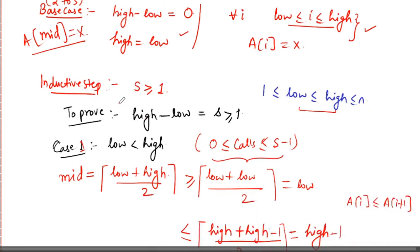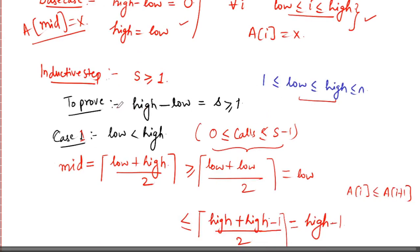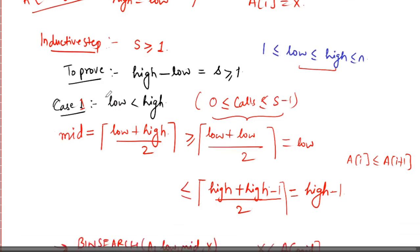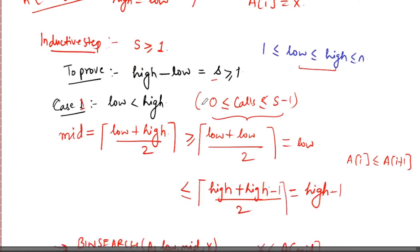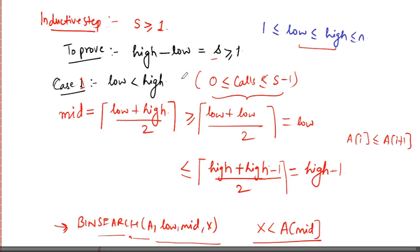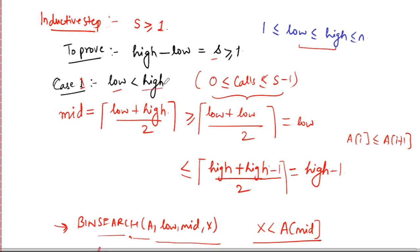Moving on to the inductive step, where there can be more than one element. Our objective here is to prove that i minus low is greater than s, since s is greater than 1. This gives two cases: case one is where low is less than high, and the number of recursive calls has to be between 0 and s minus 1. If there are more recursive calls than s, that means there is some mistake in the code.